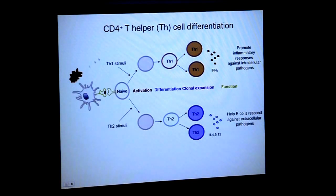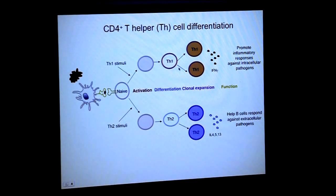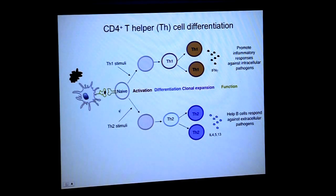The way it works is that a dendritic cell or antigen-presenting cell presents a pathogen peptide. Depending on the pathogen and context, you activate the naive T cell. If you have TH1 stimuli, the cell becomes activated and differentiates, with clonal expansion of a TH1 population which produces interferon gamma — important for promoting responses against intracellular pathogens. Whereas if you activate a naive T cell when there are TH2 stimuli around, they differentiate and produce cytokines important for helping B cells respond. This is a simplified model.